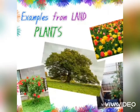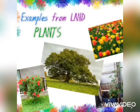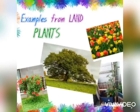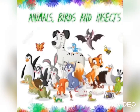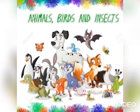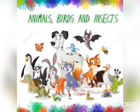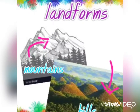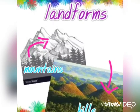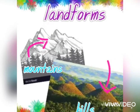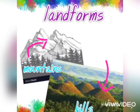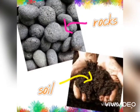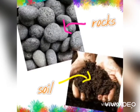Examples from land are plants, trees, shrubs, vines, and flowering plants. Animals, birds, and insects are natural materials. Land forms like mountains and hills, and even rocks and soil are natural materials.